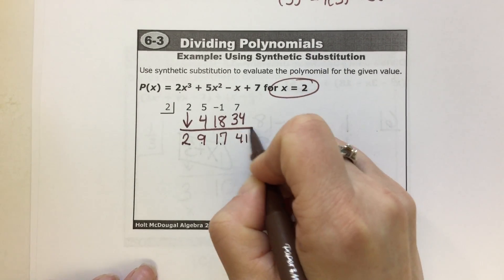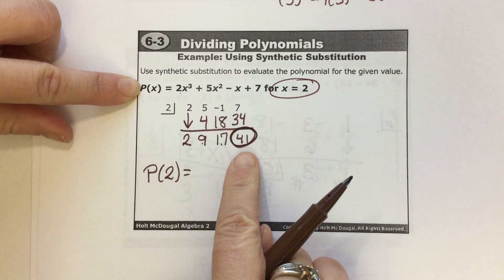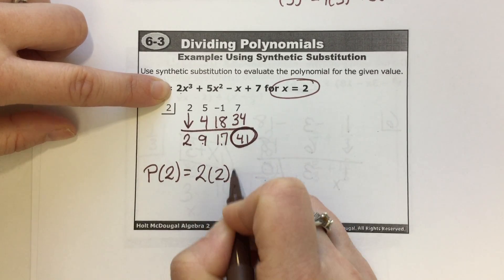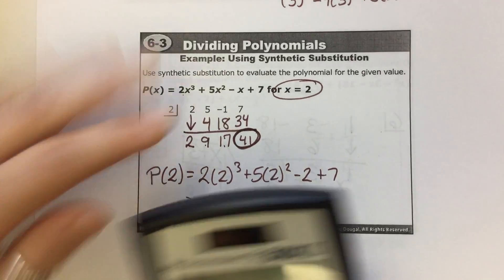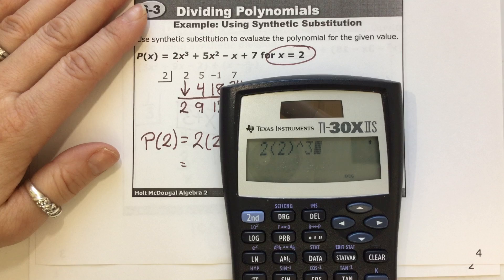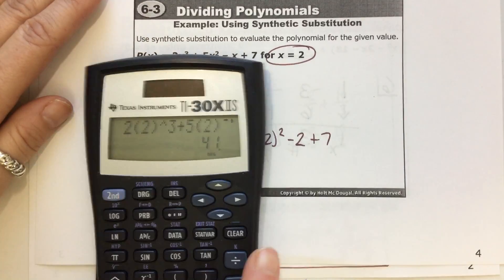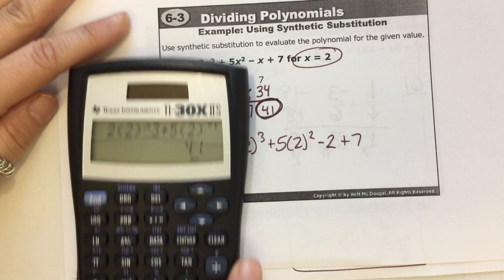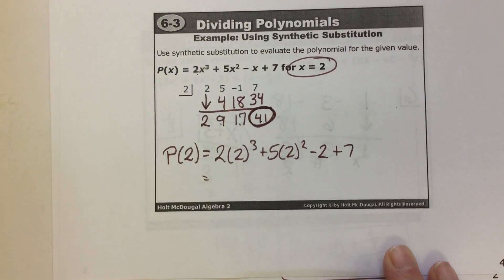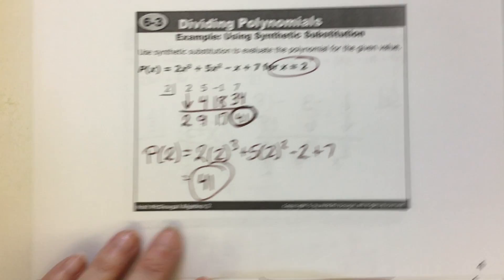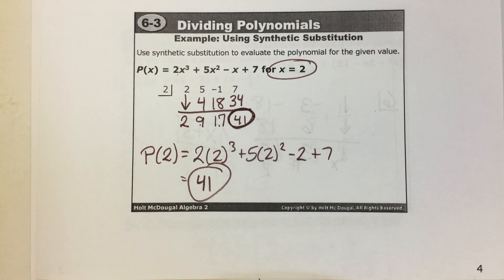7 plus 34 is 41. So if this is true, I can take the polynomial, put in 2, and I should end up getting 41. And indeed: 2 times 2³ plus 5 times 2² minus 2 plus 7 equals 41. If you fill the number in the box into the polynomial for all x's, the value matches the remainder from synthetic division. This is so cool — not only can we divide polynomials, but we can also evaluate polynomials using synthetic division.